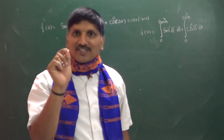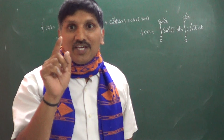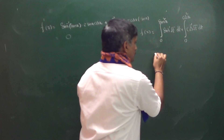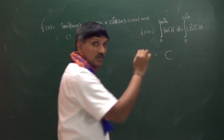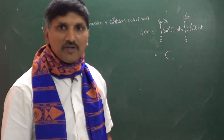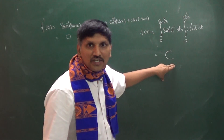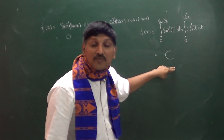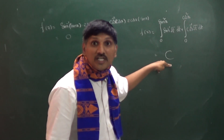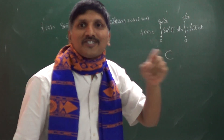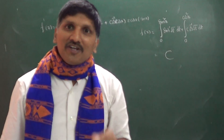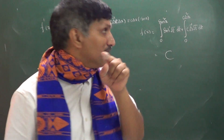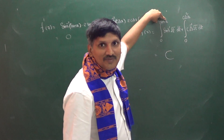Since f'(x) = 0, f(x) is a constant function. That means f(x) has the same constant value everywhere — f(0), f(1), f(2), f(π/4) are all the same constant. The reason I choose x = π/4 is that substituting x = π/4 makes both upper limits equal to 1/2, which is convenient.